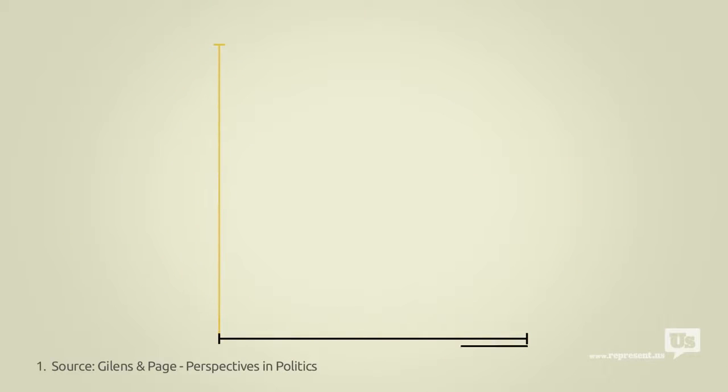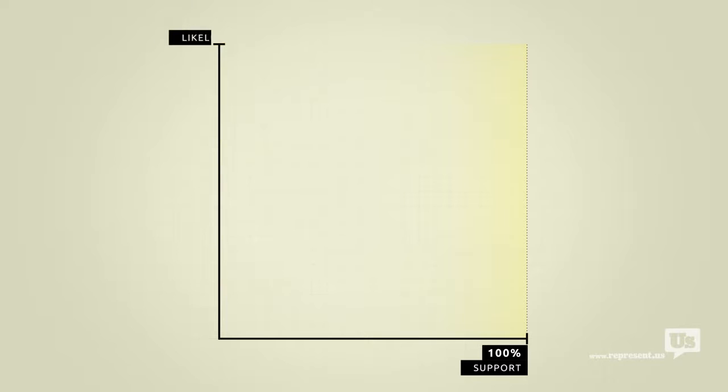This axis here represents public support for any given idea. On the left at 0% are ideas that not a single American wants. On the right at 100% are ideas that everyone supports. This axis represents the likelihood of Congress passing a law that reflects any of these ideas from a 0 to a 100% chance.